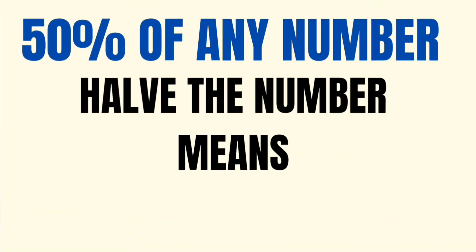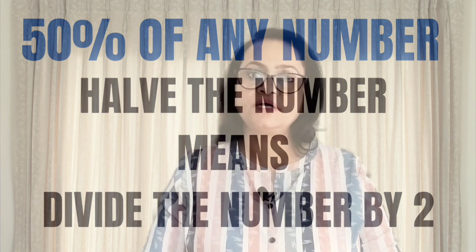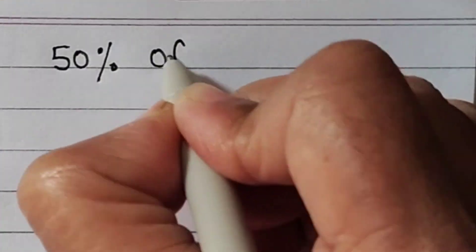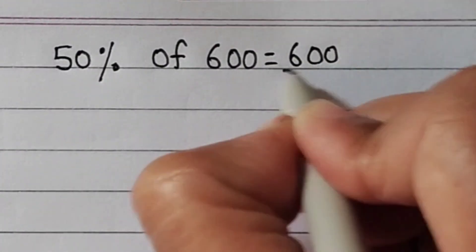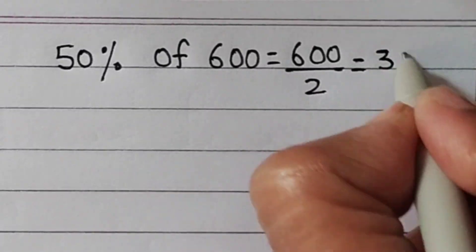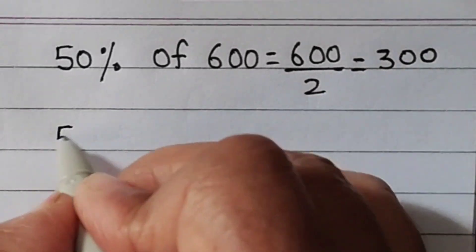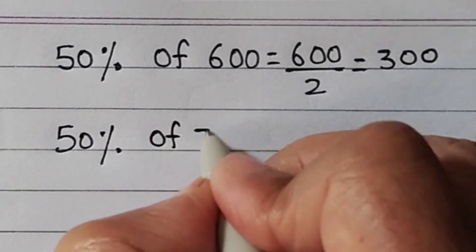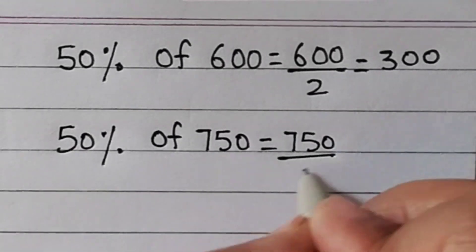Now let's learn to find 50% of any number. 50% means half. So just half that number and you will get the 50%. So 50% of 600 is 600 divided by 2 which is equal to 300. 50% of 750 divided by 2. 750 divided by 2 is 375.